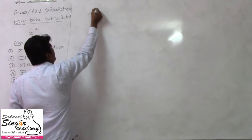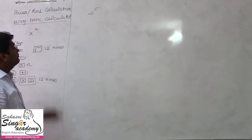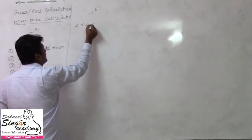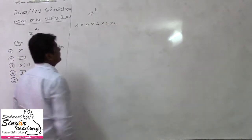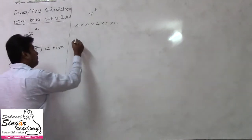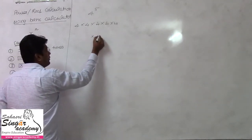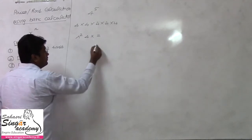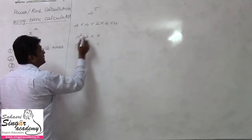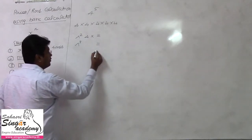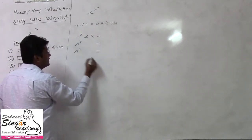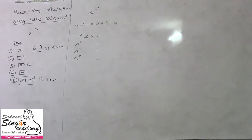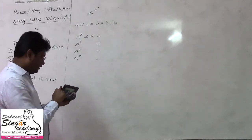For example, 4 to the power 5. The normal method is 4 into 4 into 4 into 4 into 4. So 4 into 4 equals power 2, 4 into 4 equals power 3, that is power 4, and that value is power 5. You can get this value directly in your normal calculator by doing 4 into equal repeatedly.